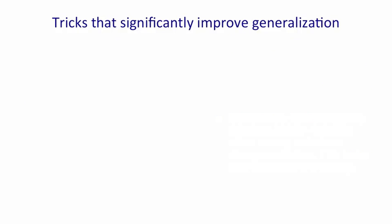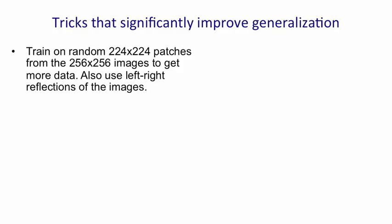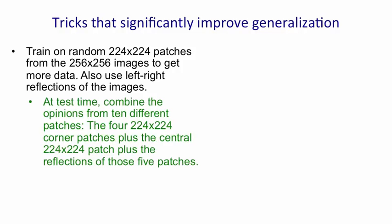There are other tricks used to significantly improve generalization. First, data enhancement using transformations: the images in the competition were downsampled to 256x256, but Alex Krizhevsky took random 224x224 patches from those images, giving hugely more training images and helping with translation invariance. He also used left-right reflections, which doubled the data again — but not up-down reflections because gravity is very important. At test time, he uses ten patches — the four corners, the middle, and left-right reflections of all those — runs all ten through the network and combines their opinions.